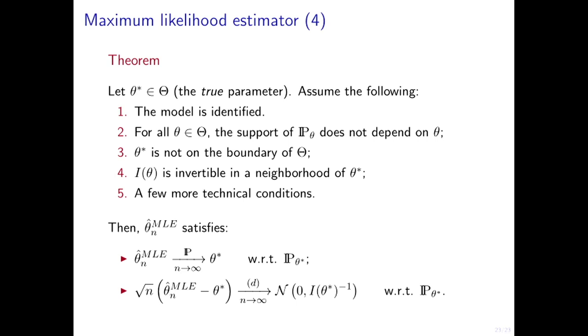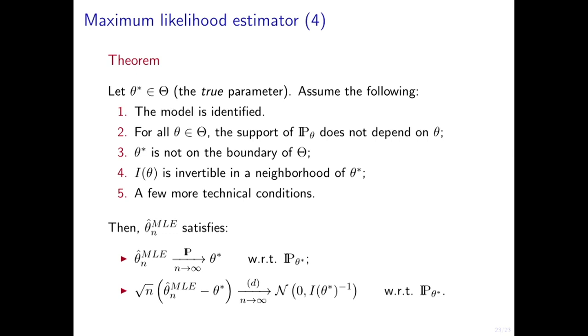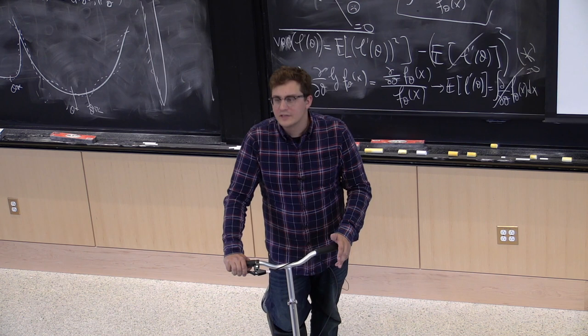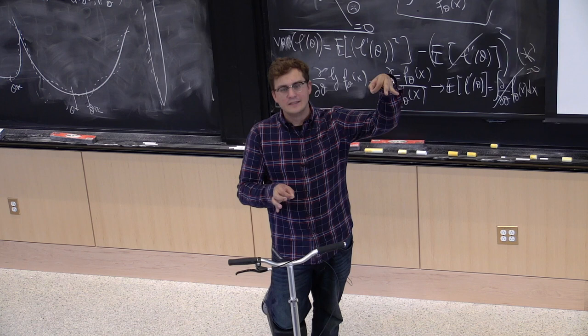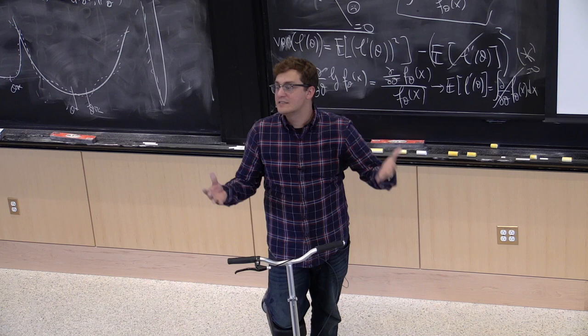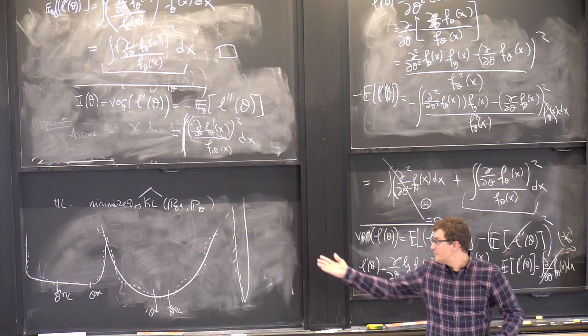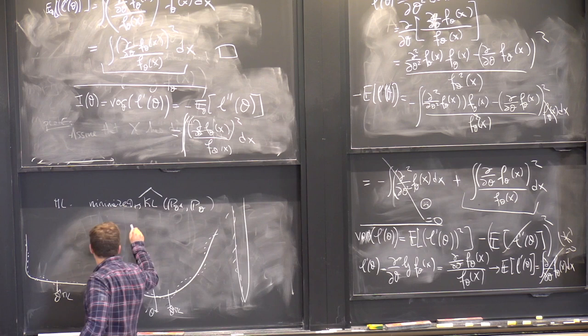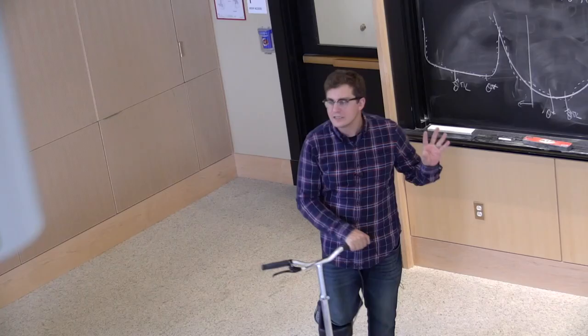Third: theta star is not on the boundary of the parameter space. We're talking about derivatives, and if we're at the boundary, the derivative conditions don't apply. Everything in the curvature picture is valid only if we're achieving the minimum inside the space. Think of theta as being the entire real line — then everything is inside.